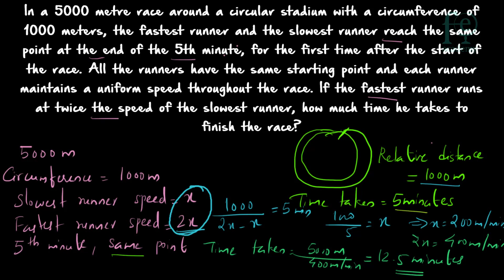So, understood how to do this question? The fastest runner and the slowest runner meet at the same point, meaning the relative distance covered equals 1000 meters, covered in 5 minutes using relative speed 2x minus x equals x. From that you find x, then the fastest runner's speed, then the time to finish the race. These two questions discussed in this video are CAT level questions. If you are planning to appear for the CAT examination, you can prepare using this video. Thank you for watching.